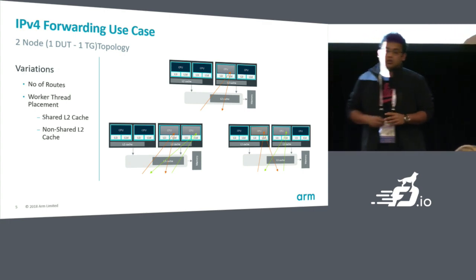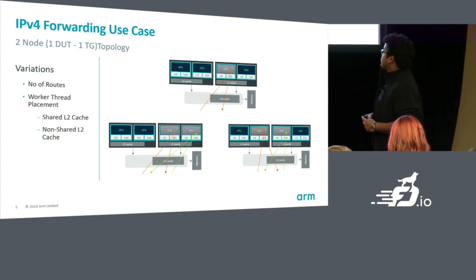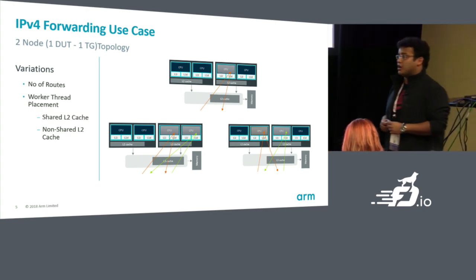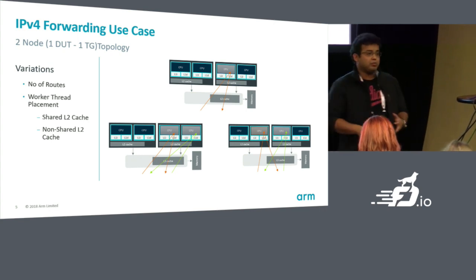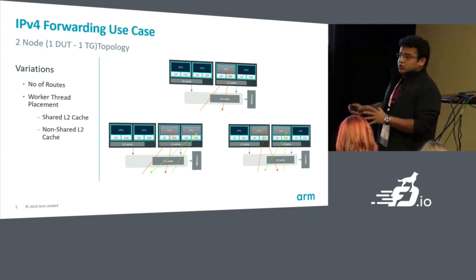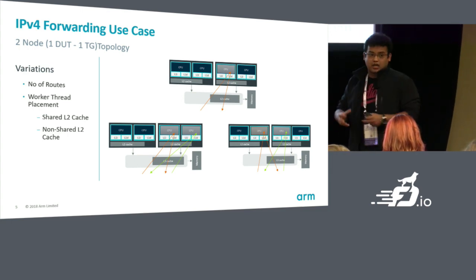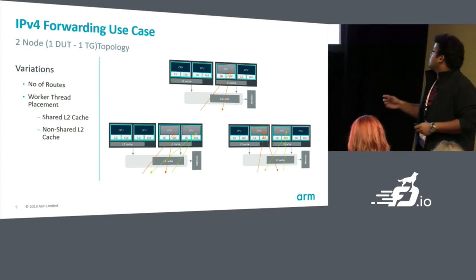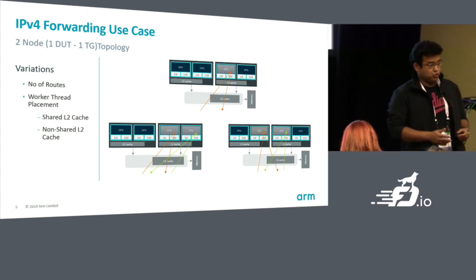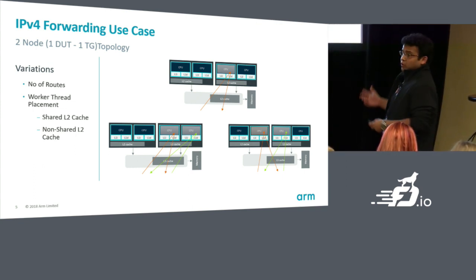How did we start? For VPP, we started with a use case. The first use case we tried was the IPv4 forwarding use case — a simple use case where you install a bunch of routes, send traffic, and expect VPP to do the lookup and rewrite and send it back. The variations we tried: in some ARM systems you have ARM cores in a cluster which share an L2 cache, so we tried to place the worker threads at different locations, like having their own individual L2 scratch pad or sharing one L2 cache.